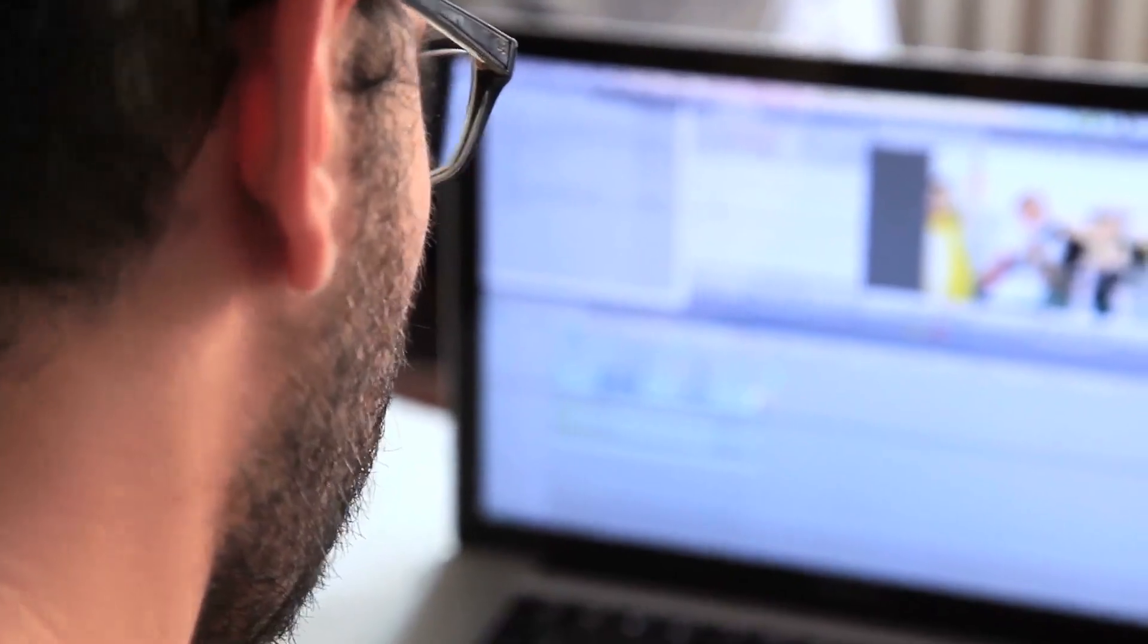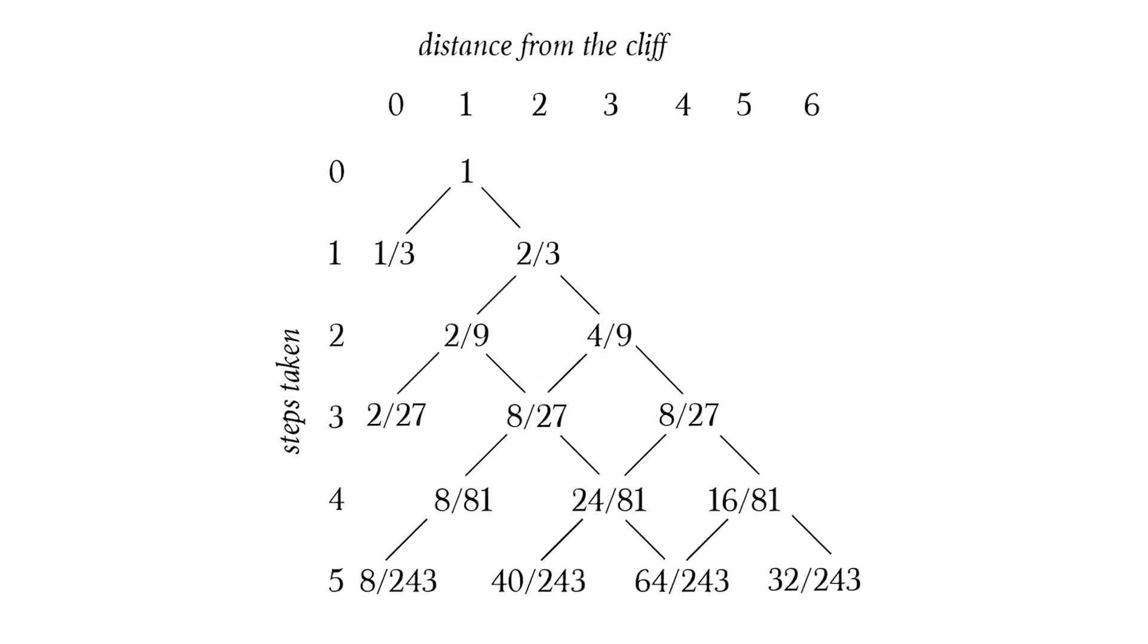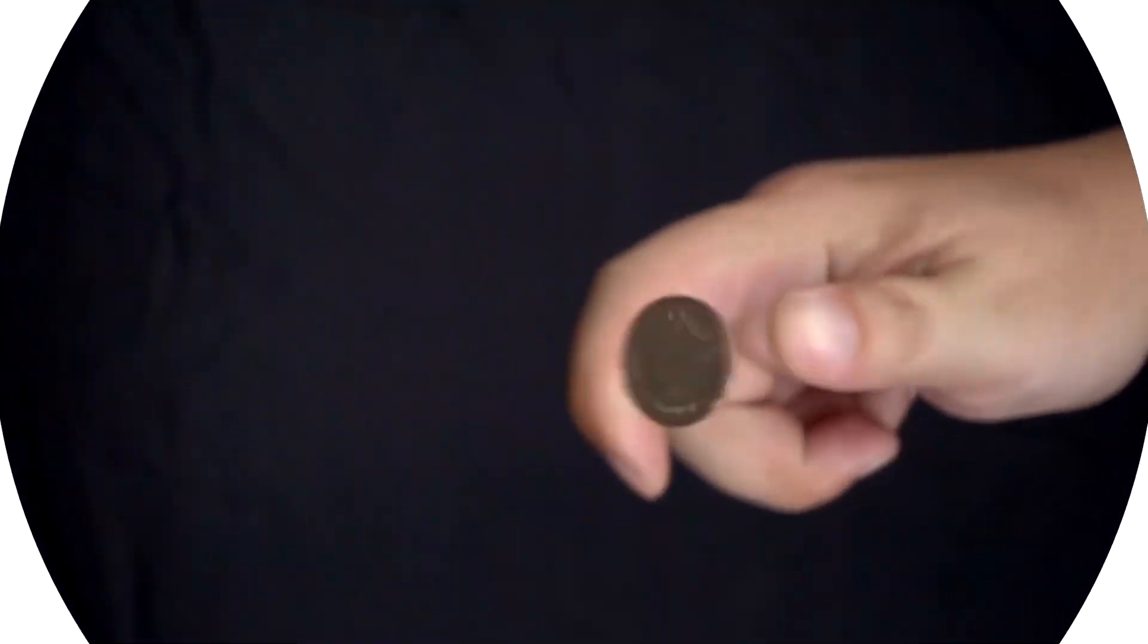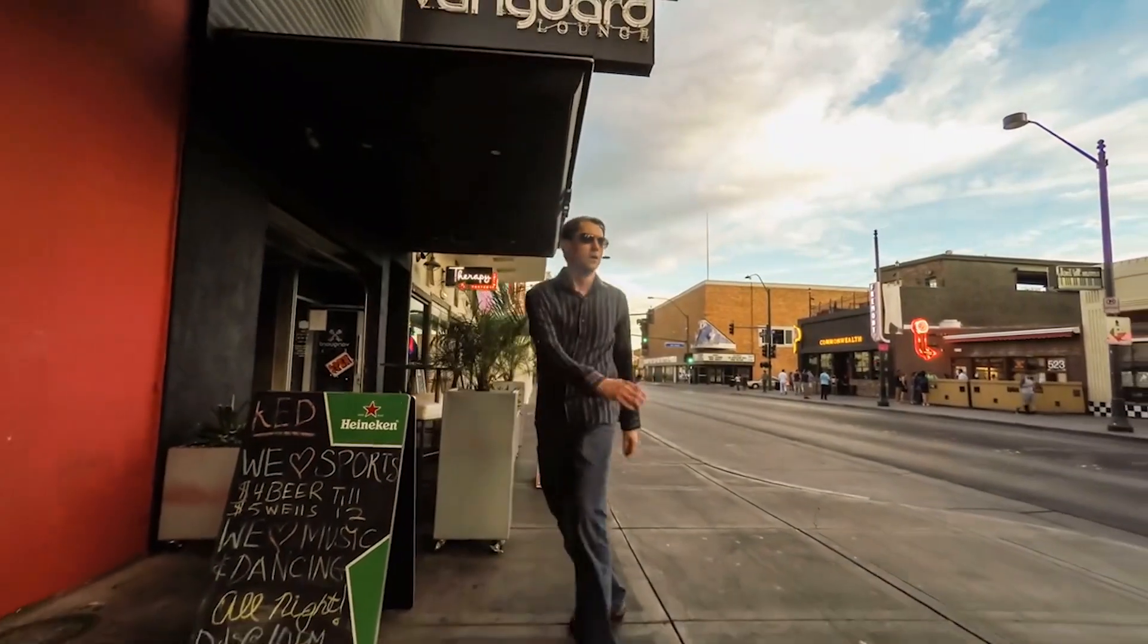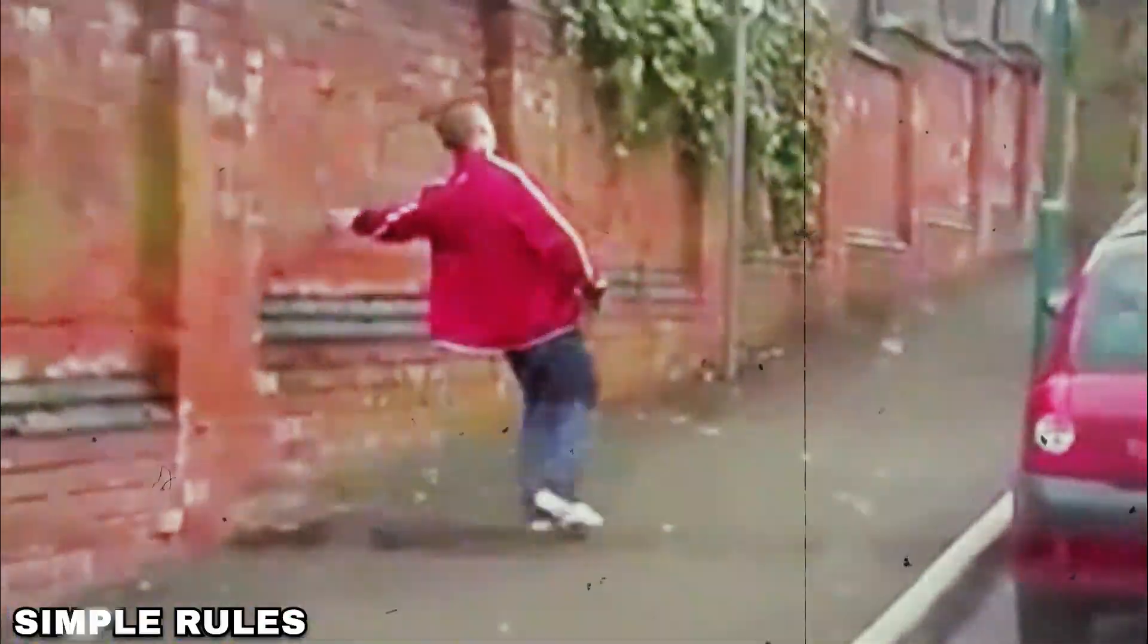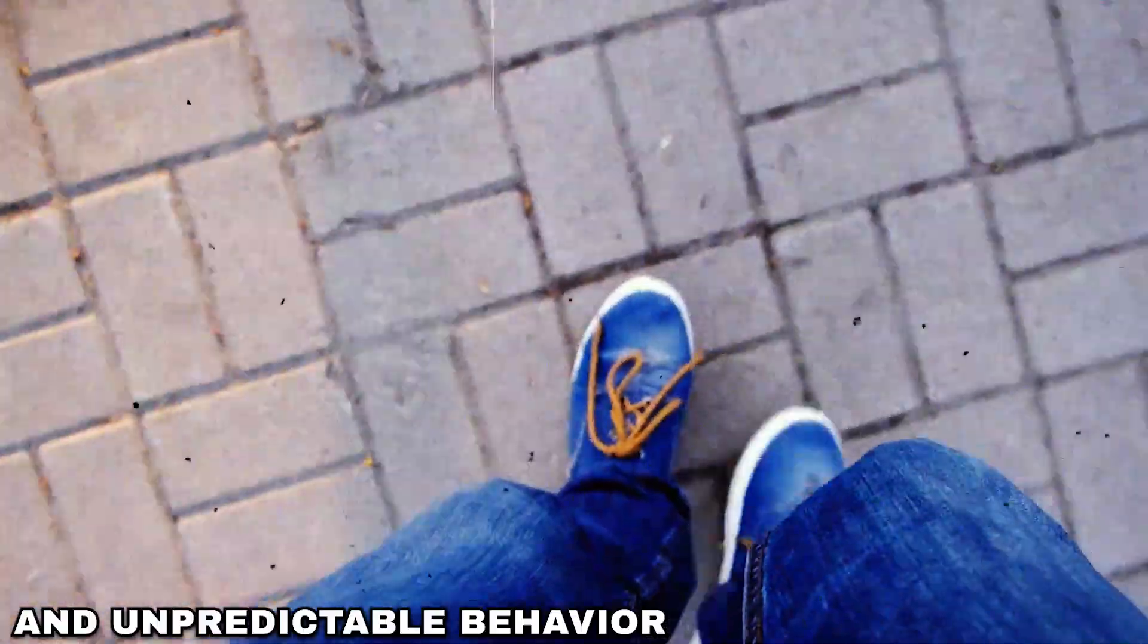The implementation of the algorithm is very simple. All you need is a way to generate random numbers and a set of rules for how the walker moves. For example, a walker might flip a coin to decide whether to take a step forward or backward, and another to decide whether to turn left or right. The Drunkard's Walk is a reminder that even simple rules can lead to complex and unpredictable behavior.